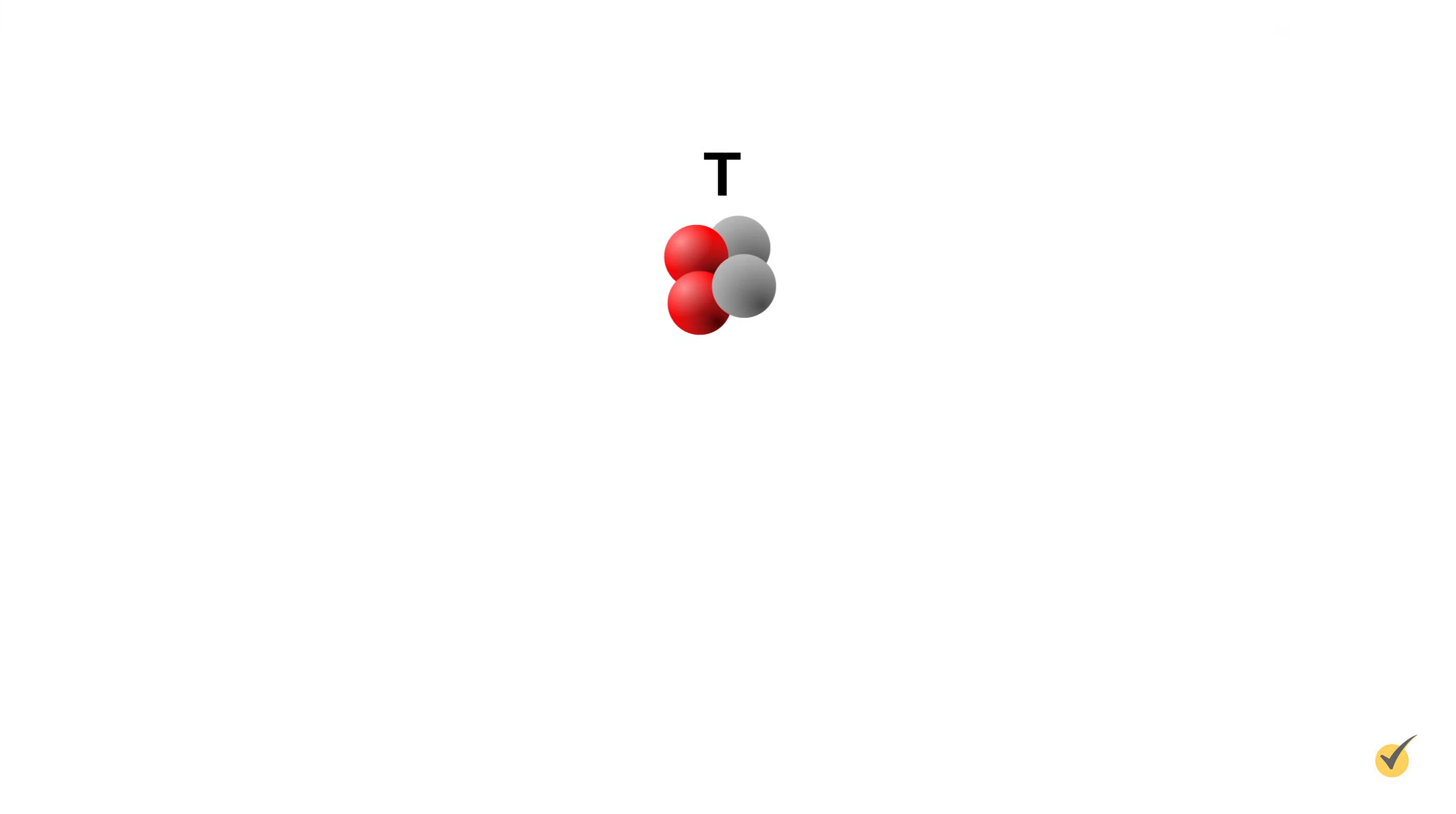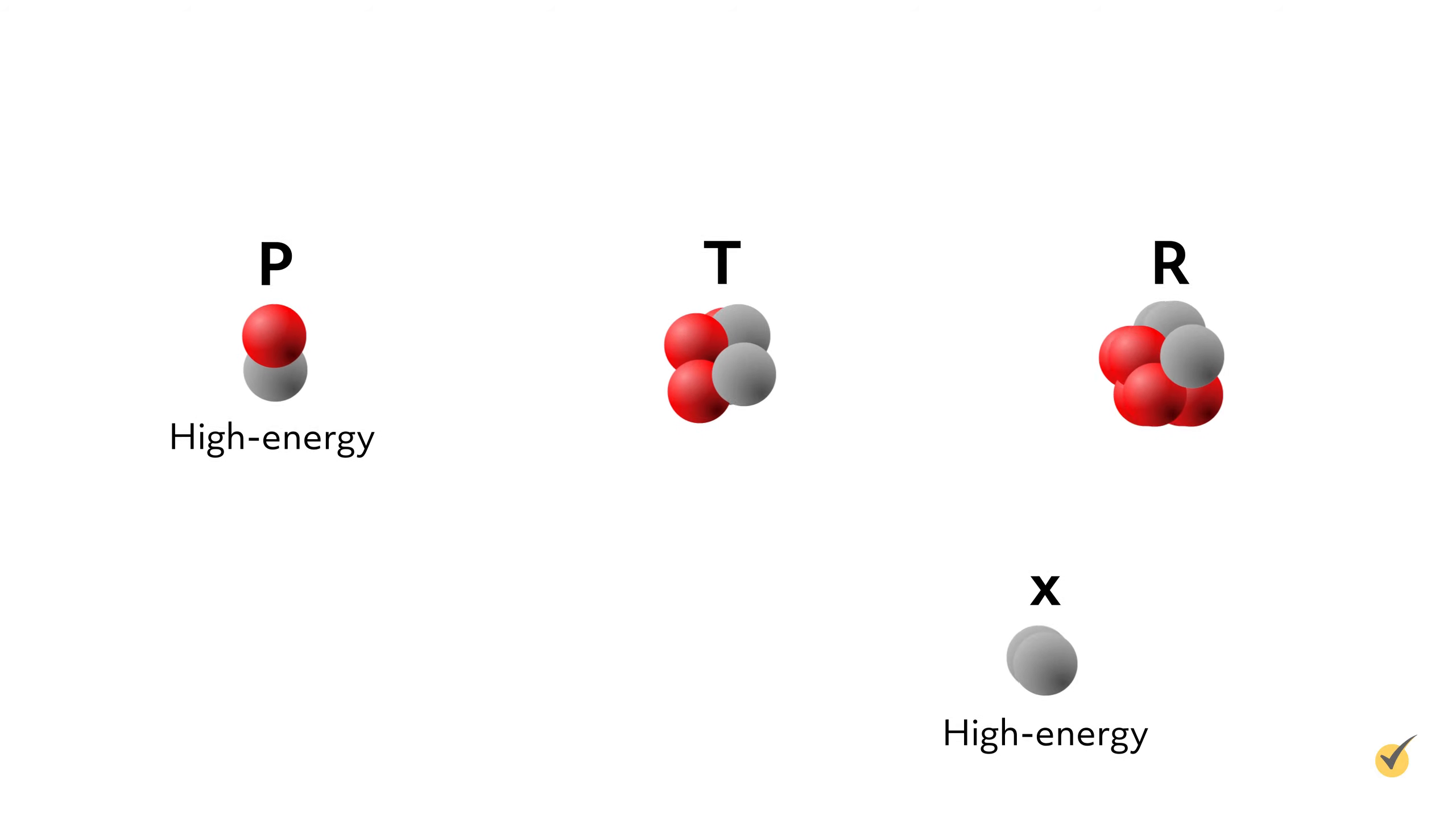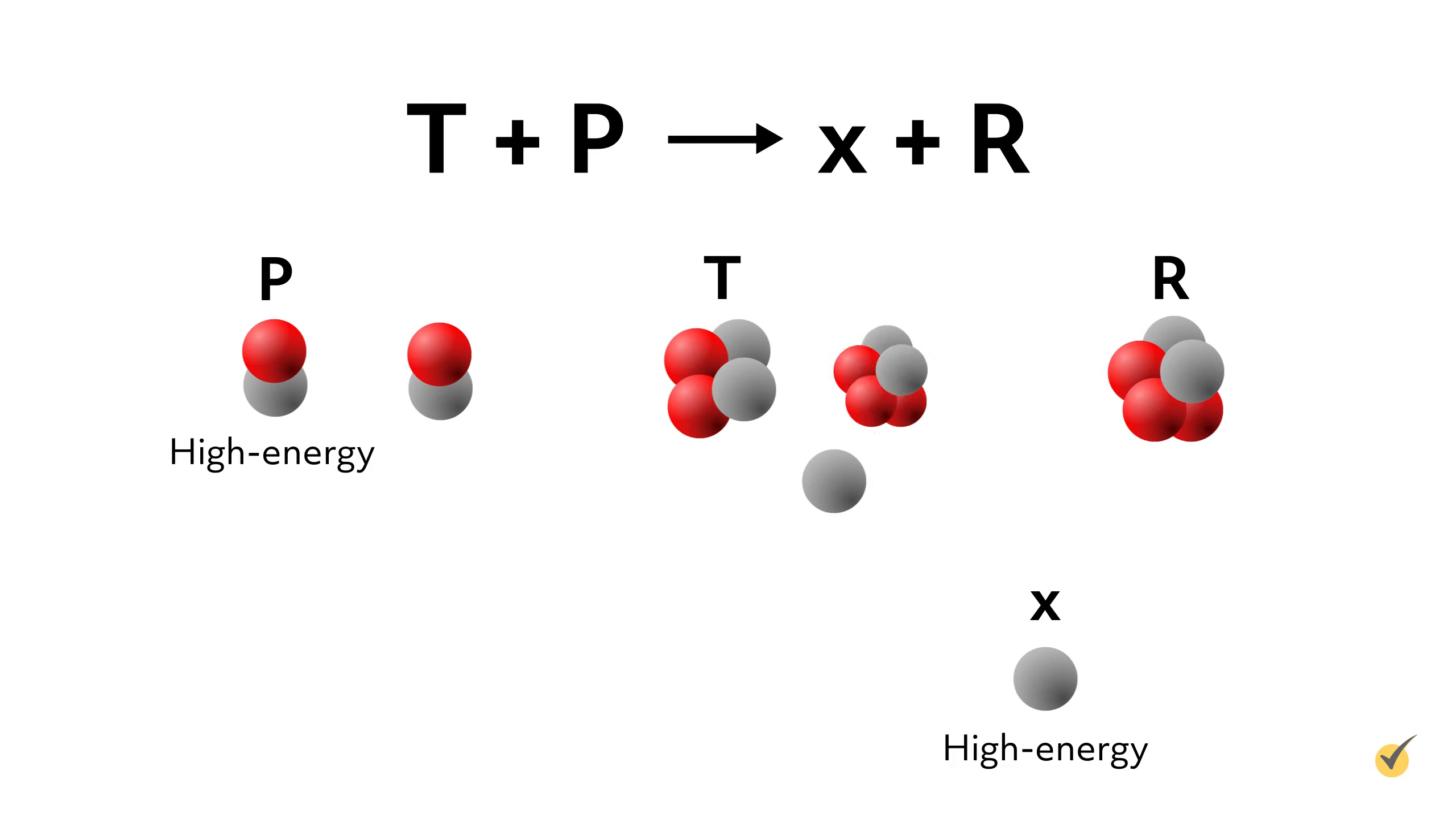In nuclear transmutation reactions, scientists induce the elemental conversion of a nucleus. In the experimental setup, there is a target species T, which is bombarded with a projectile P. This produces an emitted particle X and a residual nucleus R. Using the notation of a standard chemical reaction, this is the same as saying T plus P reacts to form X plus R. So along with being shorter, this notation provides additional information about the experiment and the energy of the particles.